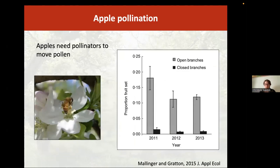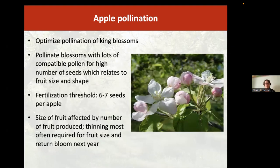They also need pollinators—insects, in this case bees—that are going to be primarily moving the pollen around. If you have apple branches open to pollinators versus closed with a bag around them, you see a major reduction in fruit set. You really need those insects there to provide this cross-pollination. You want to optimize pollination of the king blossoms—the first bloom on the bouquet of flowers—that's what you want to optimize.